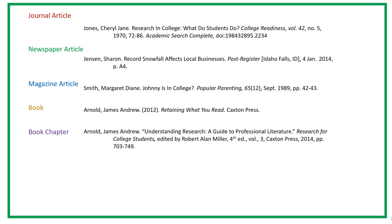When you look at a list of sources, it is important to recognize the format of each source. Without a label, you should be able to know which sources are books, which are journal articles, and so on. For example, books include the publisher, but articles only include the name of the magazine, newspaper, or journal. Journals and books provide only the year of publication, while magazines and newspapers provide the complete date. What other differences help you distinguish the format of a source?